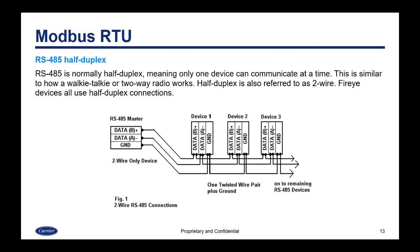RS-485 is normally half duplex, meaning that only one device can communicate at a time. This is similar to how a walkie-talkie or a two-way radio works — only one device can talk at a time until it releases the line. Half duplex is referred to as two wire. FireEye devices all use half duplex connections.